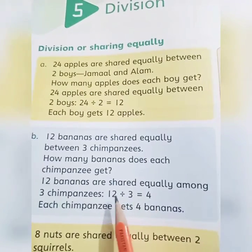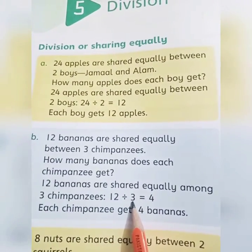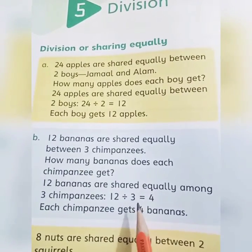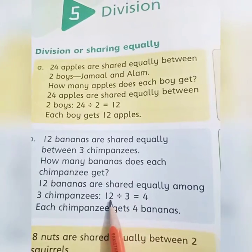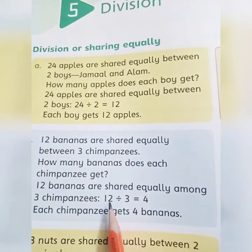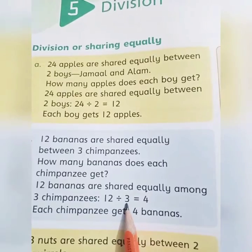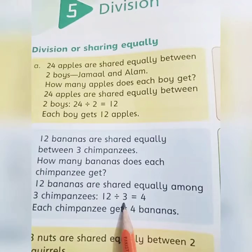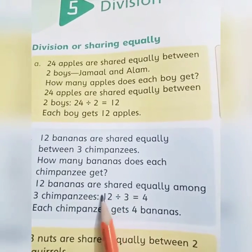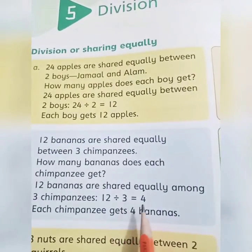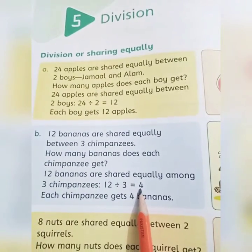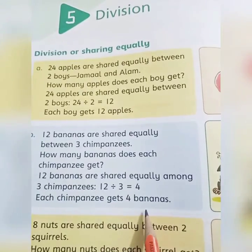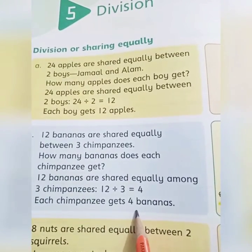We don't know yet because we haven't read the table. Which table will we read — table of 12 or table of 3? Which is the smaller number? 3 is the smaller number. Read the table of 3 until we get 12: 3×1=3, 3×2=6, 3×3=9, 3×4=12. We got 12! At what times? 3 fours are 12, so the answer is 4.